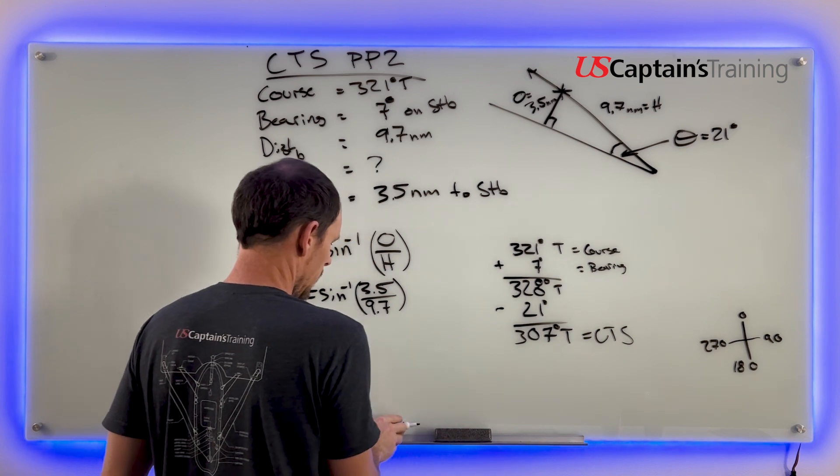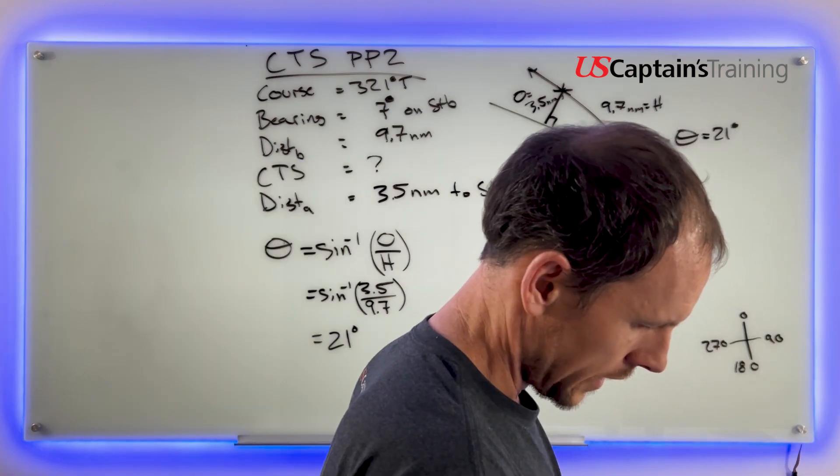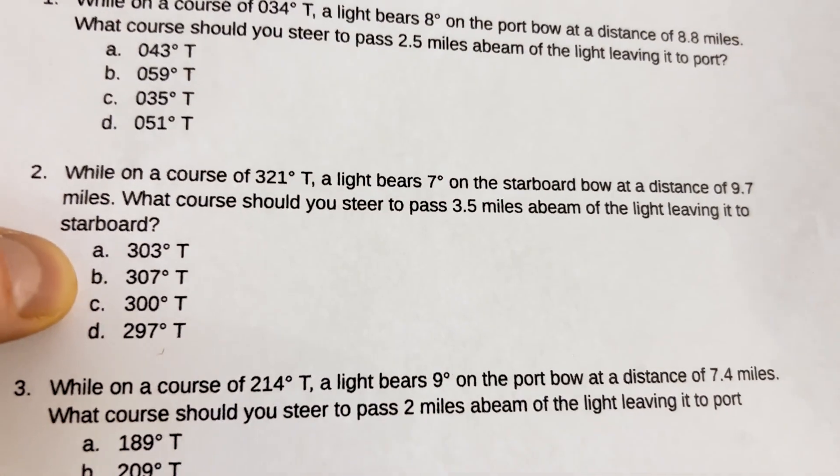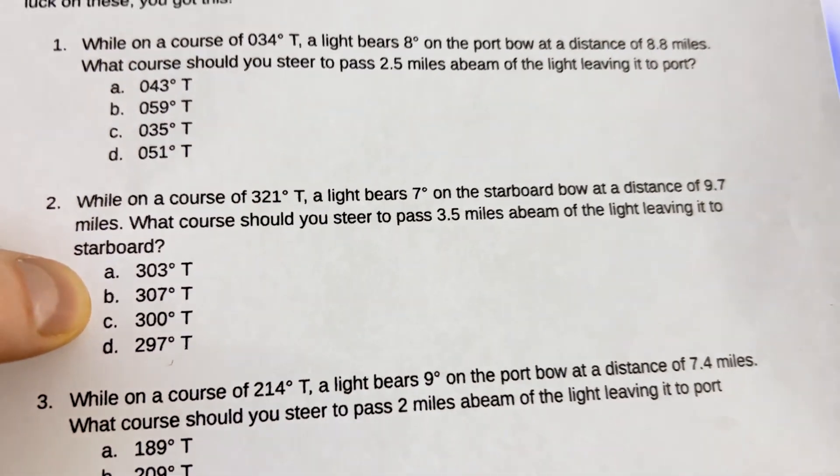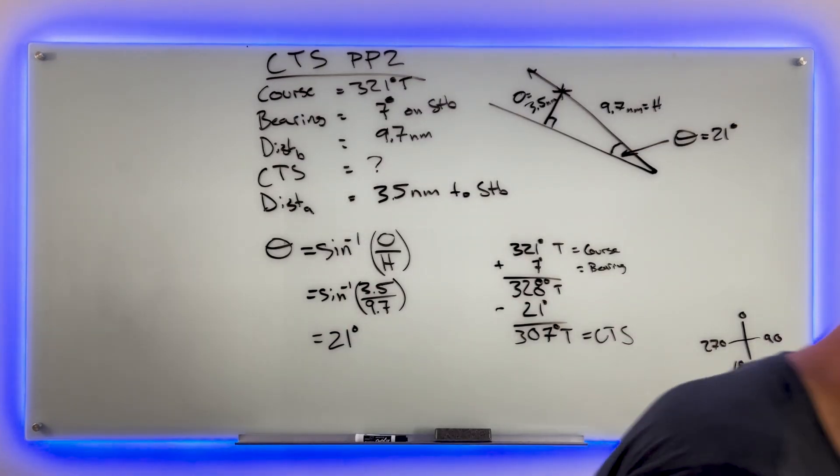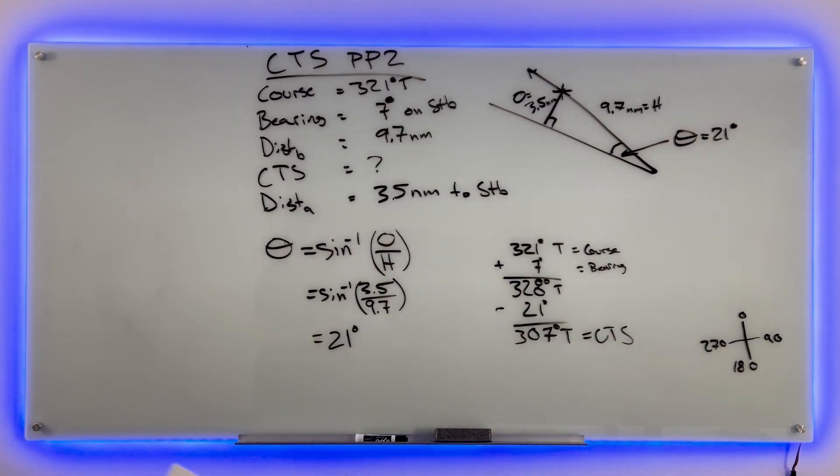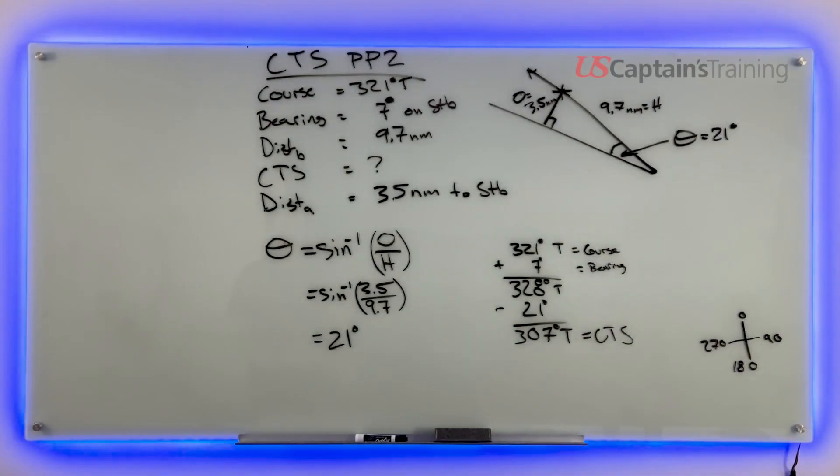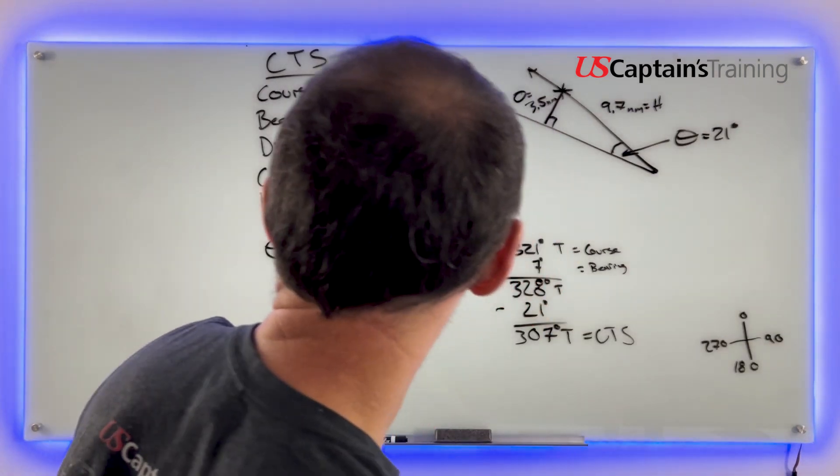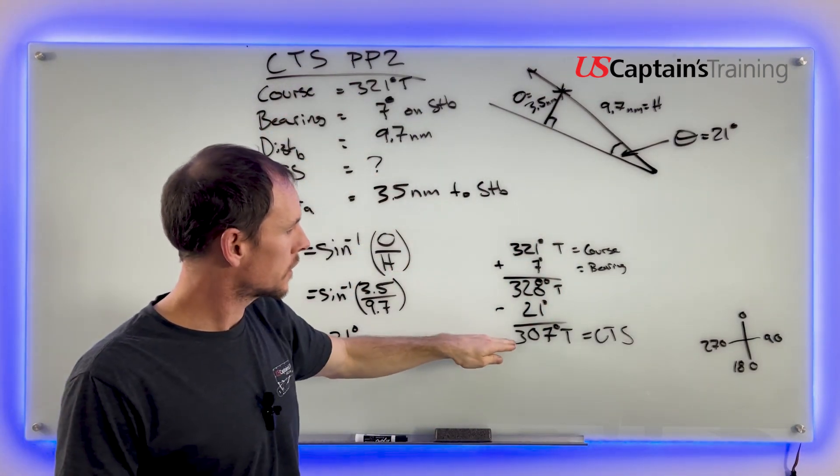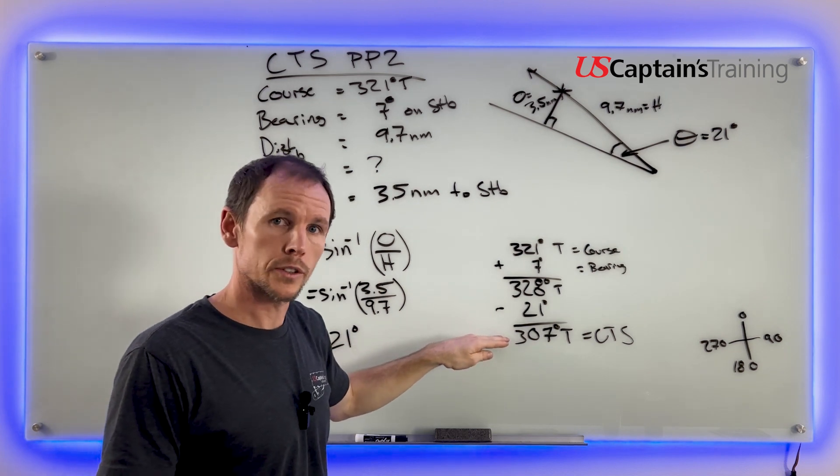Let's check, make sure we got it. I see 307B. Let's make sure it's right. Right there. Course to steer practice problem 2 comes out to 307 true is the course to steer.